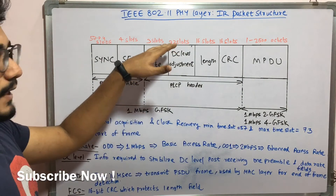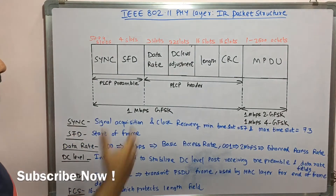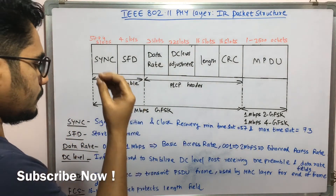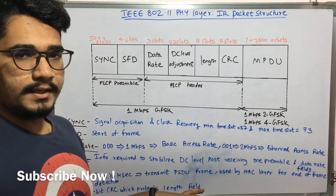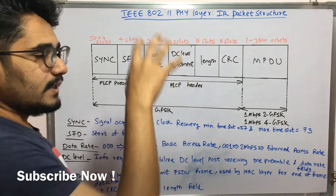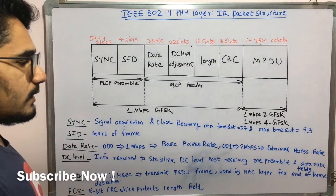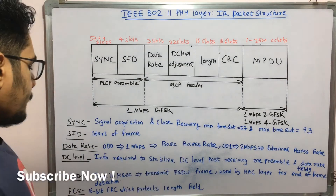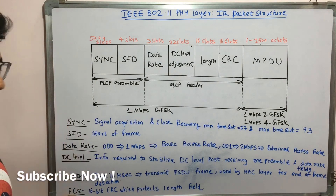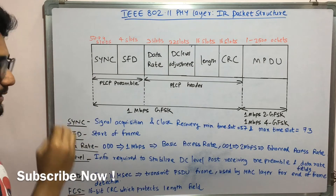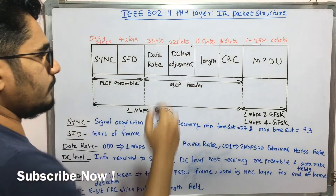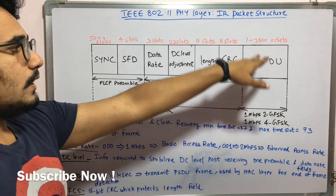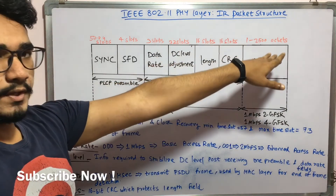The DC level is dedicated for 32 slots. Then you have the length field, which represents a time value in microseconds. It is used to transmit the PSDU — that is the protocol data unit frame — and it is used by the MAC layer to determine the end of the frame. Then you have the FCS — Frame Check Sequence — which is a 16-bit CRC that protects the length field. It is 16 slots in size, followed by the MPDU which is 1 to 2500 octets.